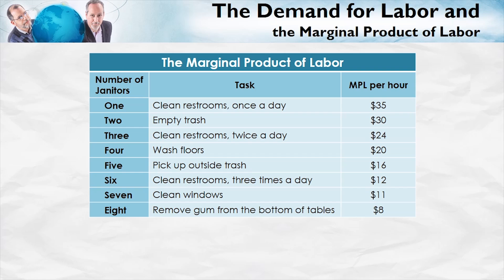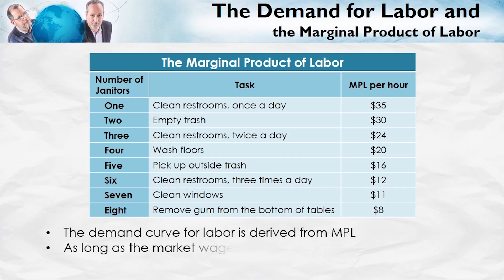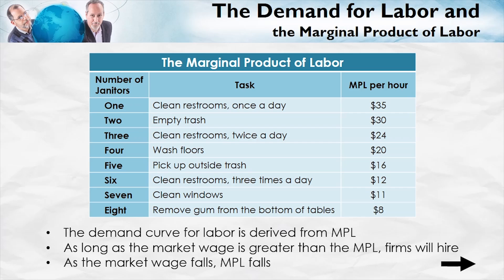The demand curve for labor is derived from the marginal product of labor. Notice that as the wage goes down, the firm will want to hire more and more janitors. And as the firm hires more and more janitors, the marginal product of labor falls. So let's take a closer look at this derivation.